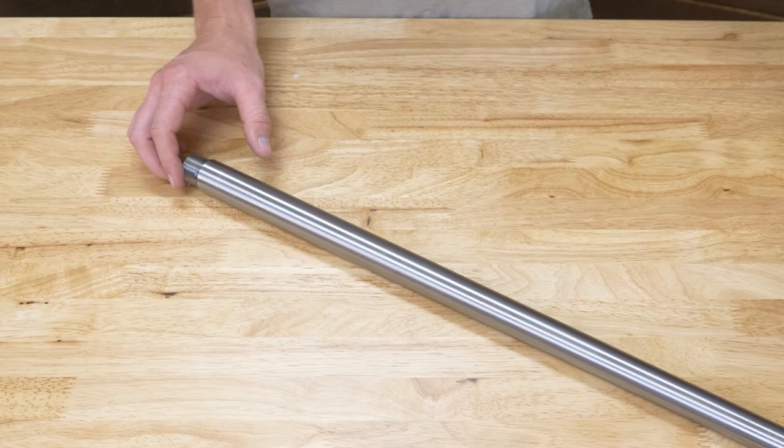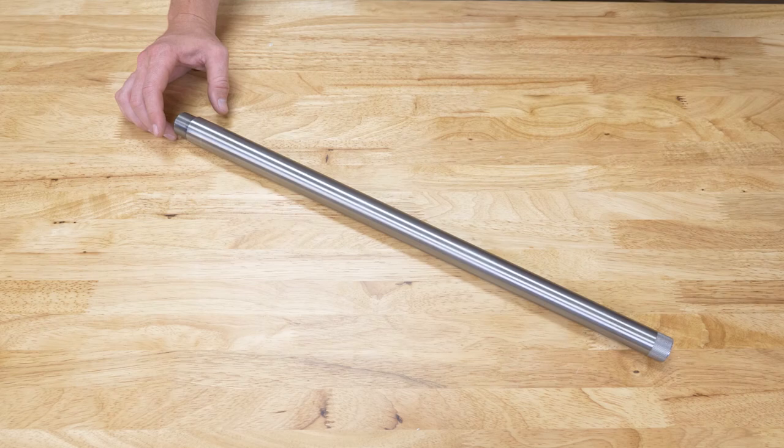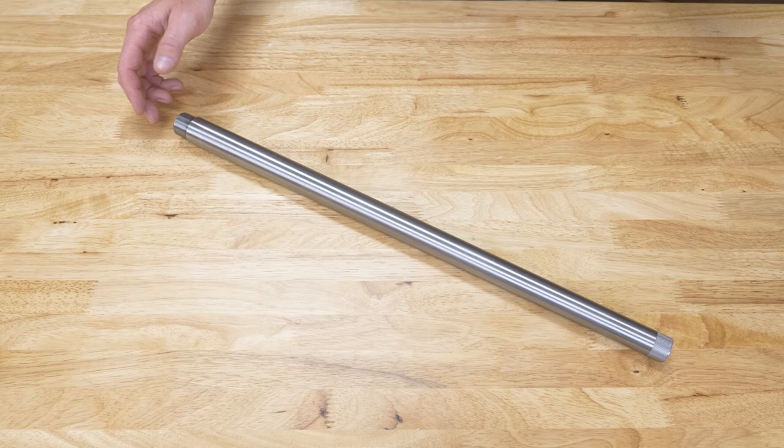A varmint contour is composed of a straight shank with a specified diameter and length from the breech with one continuous taper to the crown. MTU and M24 contours are a specific varmint profile with a specific muzzle diameter at 26 inches.